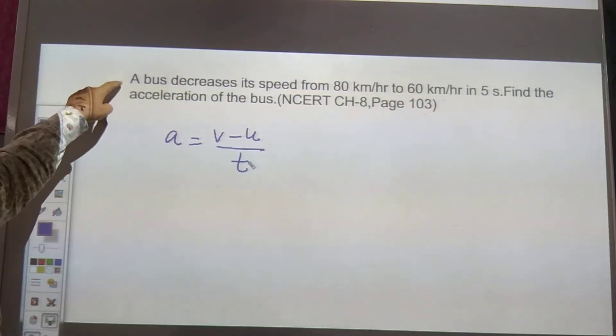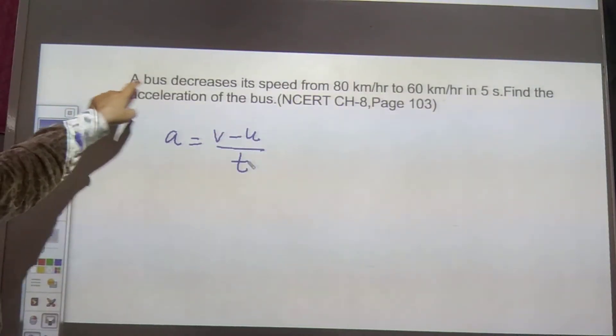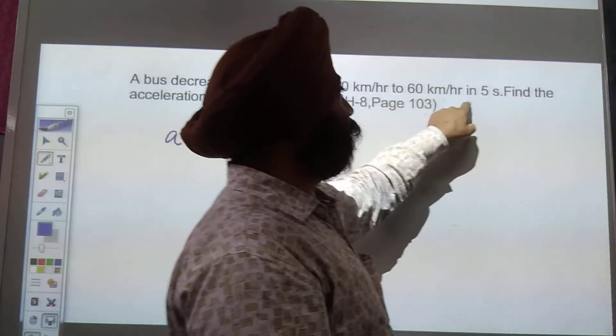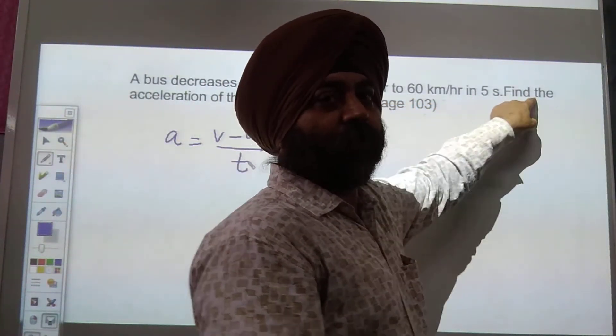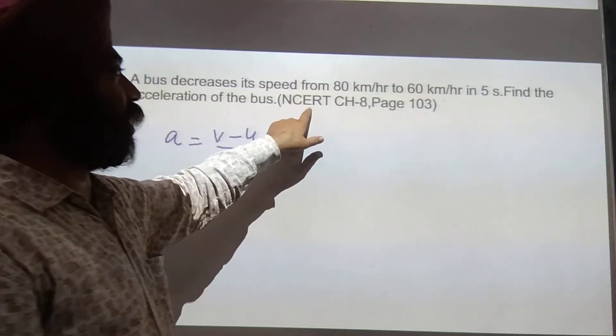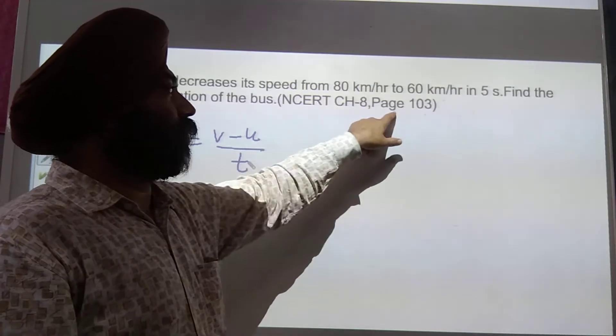So the question is, a bus decreases its speed from 80 km per hour to 60 km per hour in 5 seconds. Find the acceleration of the bus. This question is from the NCERT textbook chapter number 8, page 103.